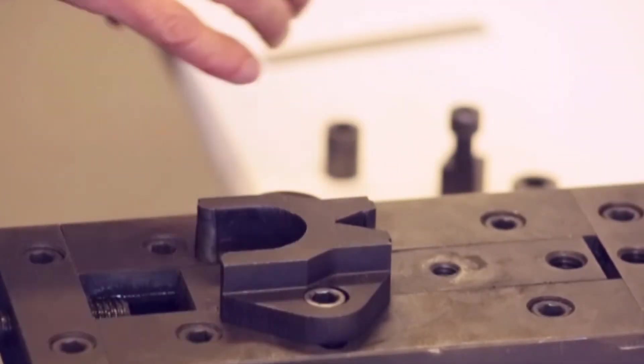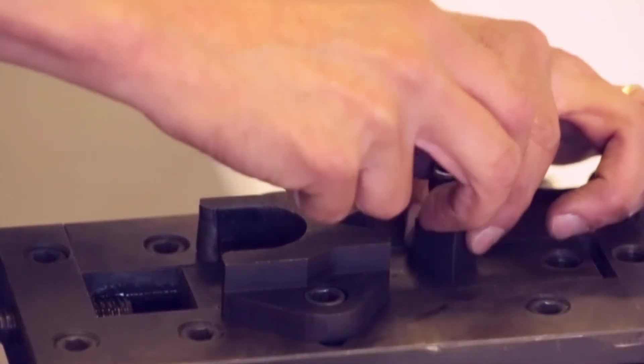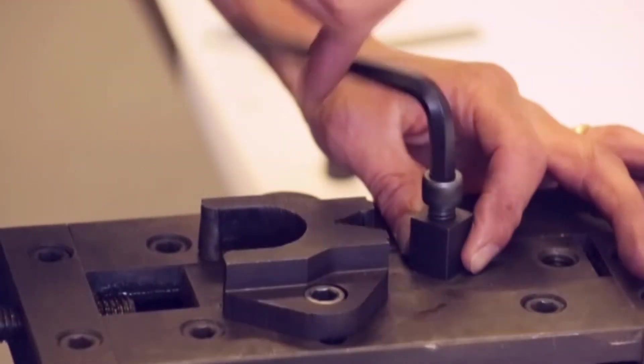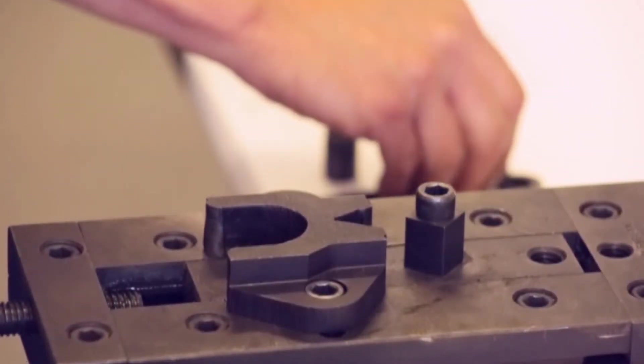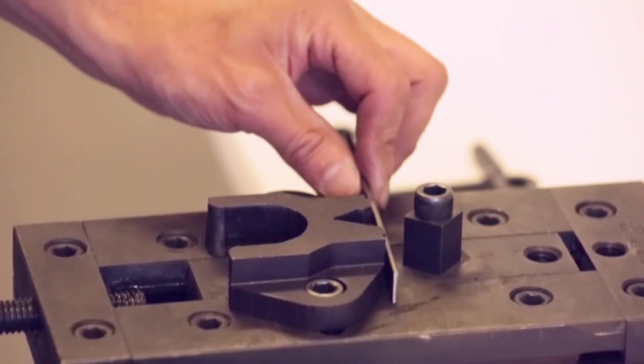By using the small square forming head and matching die you can create tight 90 degree bends ideal for making straps, collars and small components.